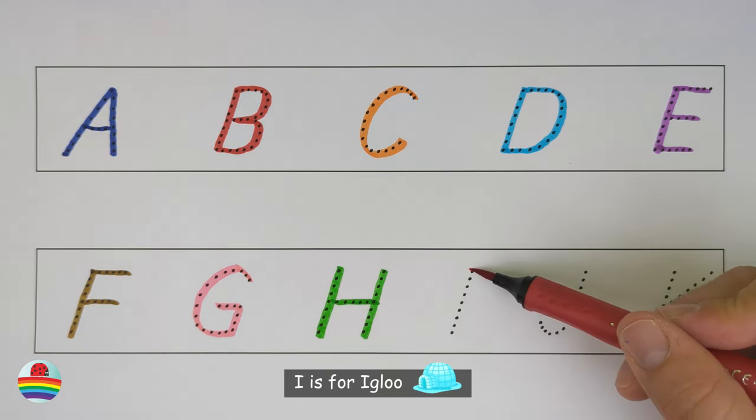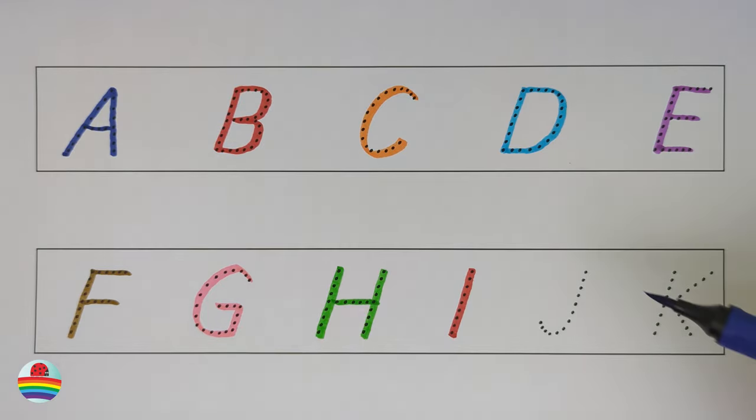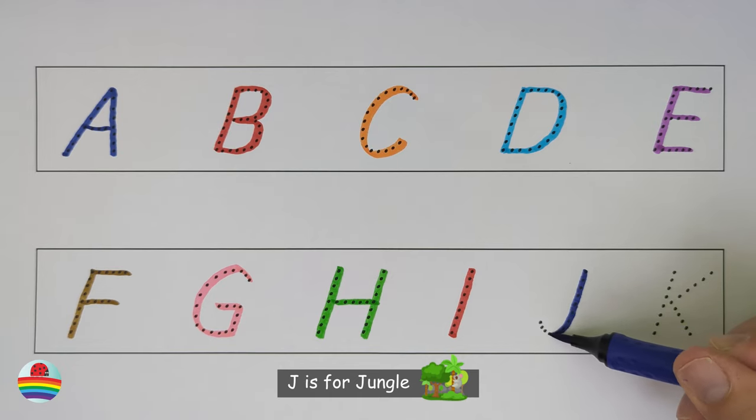I. I is for igloo. I. J. J is for jungle. J.